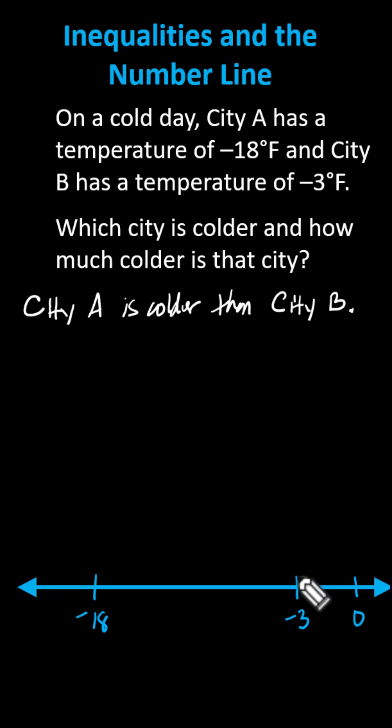Notice negative three is three units from zero, which indicates the absolute value of negative three equals positive three. And notice that negative 18 is 18 units from zero, which indicates the absolute value of negative 18 equals 18.